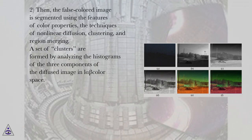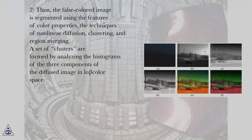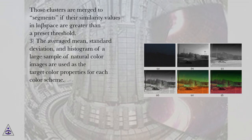Step 2: The false colored image is segmented using the features of color properties, the techniques of nonlinear diffusion, clustering, and region merging. A set of clusters are formed by analyzing the histograms of the three components of the diffused image in L-alpha-beta color space. Those clusters are merged into segments if their similarity values in L-alpha-beta space are greater than a preset threshold.